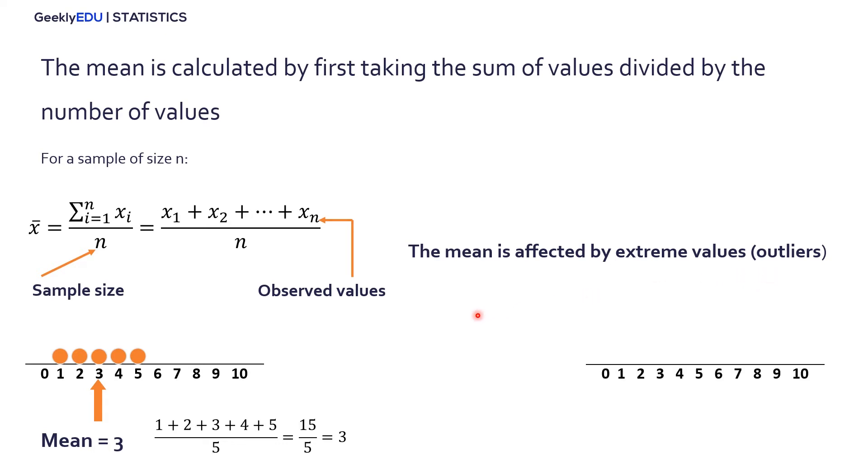It turns out that the mean is affected by extreme values or what we call outliers. So for example, let's say we redraw that same number line. But in this case, we're going to take these five dots, but I'm going to take this 5 and I'm going to pull it out all the way to here. So we have something like this: 1, 2, 3, 4, and then we jump to 10.